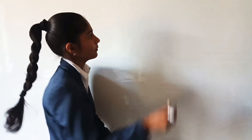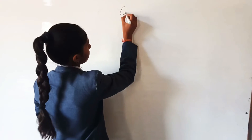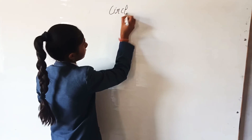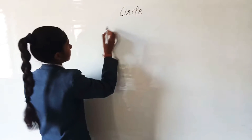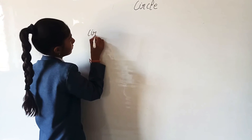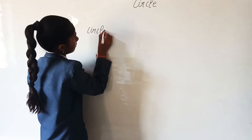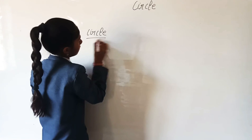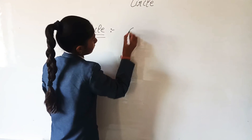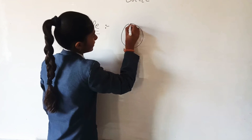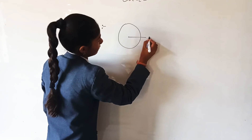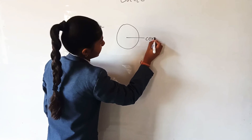So basically, what is a circle? A circle is a figure which is equidistant from a fixed point, which is known as the center. This is a circle and this is the fixed point which is known as the center.